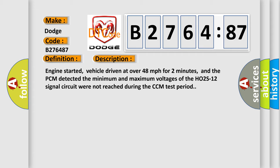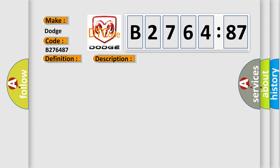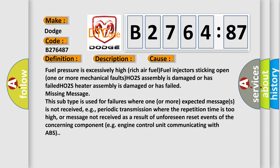Engine started, vehicle driven at over 48 miles per hour for two minutes, and the PCM detected the minimum and maximum voltages of the H02S12 signal circuit were not reached during the CCM test period. This diagnostic error occurs most often in these cases.